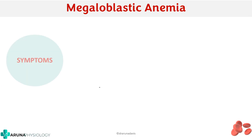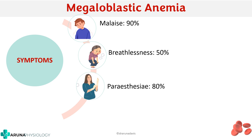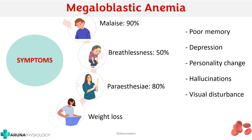What are the symptoms of megaloblastic anemia? The most common symptoms are malaise — the person will be tired and not feel like doing anything. The person will be breathless, with exertional breathlessness in about 50% of patients. There can be paresthesia in a glove and stocking manner — the hands and feet are involved earlier. You can also have weight loss, poor memory, depression, personality changes, hallucinations, and visual disturbances.